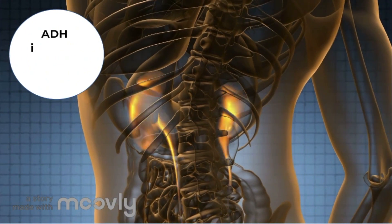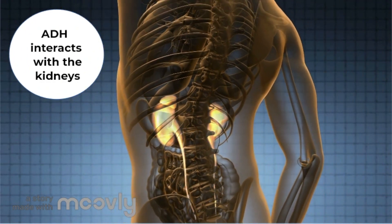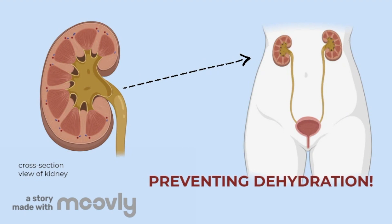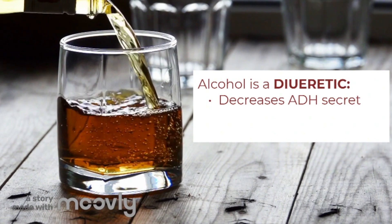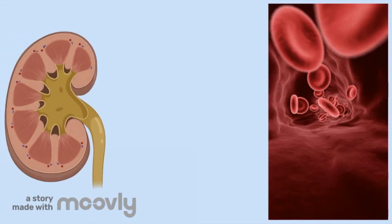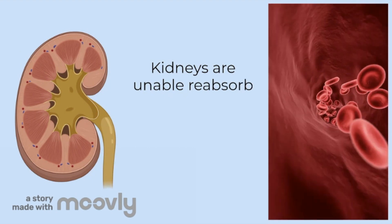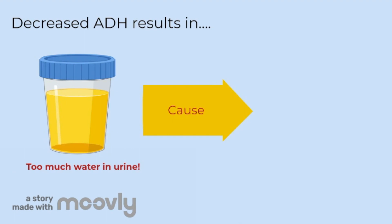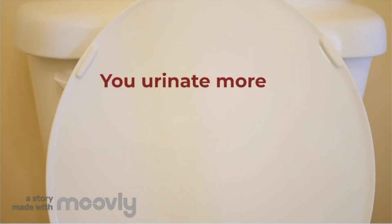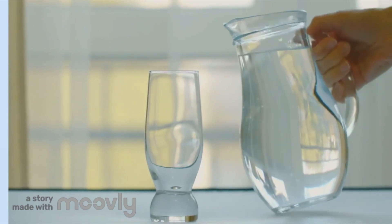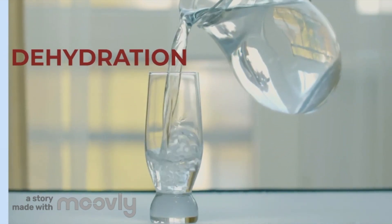ADH communicates with the kidneys, where urine is produced, to reabsorb water from the urine. By reabsorbing water, more is retained within the body, preventing dehydration. Alcohol is a diuretic, which means that it inhibits the secretion of ADH into the blood and increases the amount of fluid excreted. With less ADH circulating in the blood, the kidneys are unable to reabsorb water back into the body. With decreased ADH, the urine the kidney creates is very diluted — the body is excreting more water than it should — and this results in increased urination. When you drink alcohol, you are urinating more than you would if you drank the same volume of another fluid, like water. Increased urination can lead to dehydration, as the body is not absorbing fluids back into the blood and tissues.